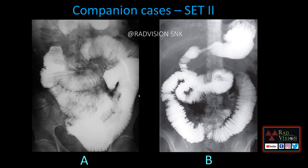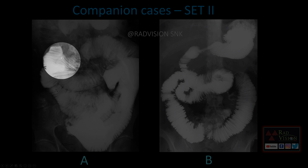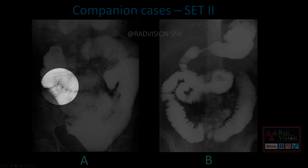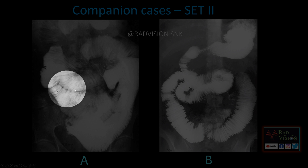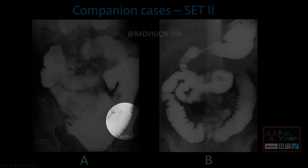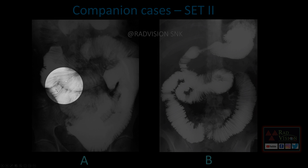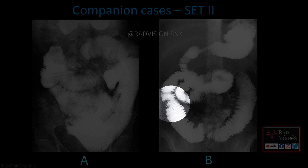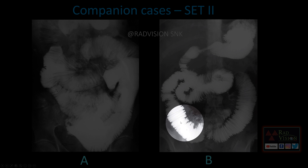Next case: there is dilation of the jejunoileal loops with rounded, widely separated valvulae conniventes in the jejunum, dilution of contrast, and jejunation of the ileum. The jejunoileal fold reversal pattern is seen, which is classically seen in celiac disease. In the second case, multiple dilated bowel loops are seen with valvulae conniventes that are widely but narrowly placed, sharply demarcated, and smooth.